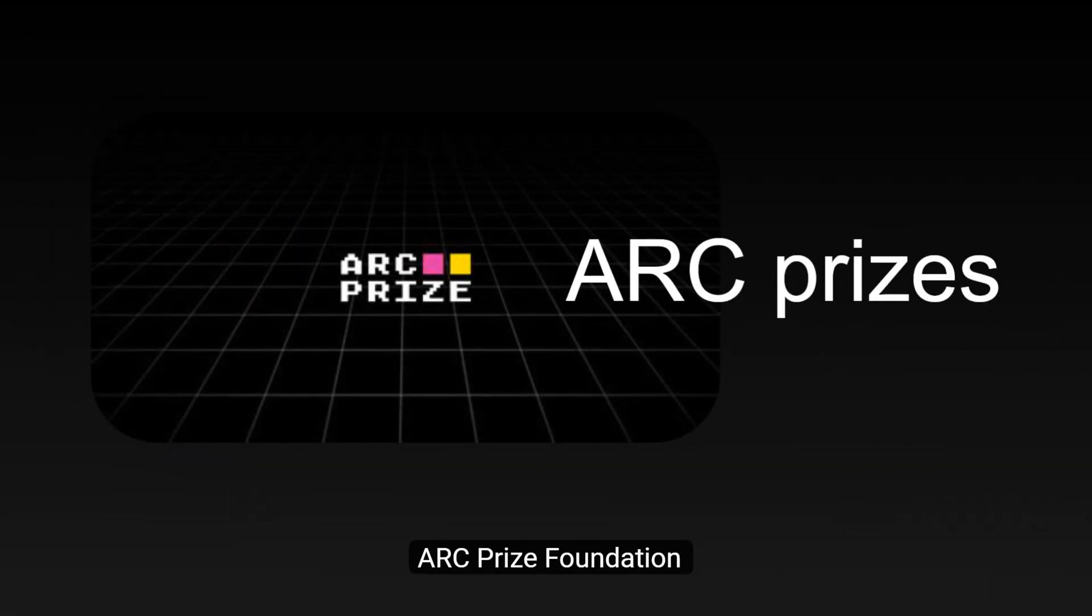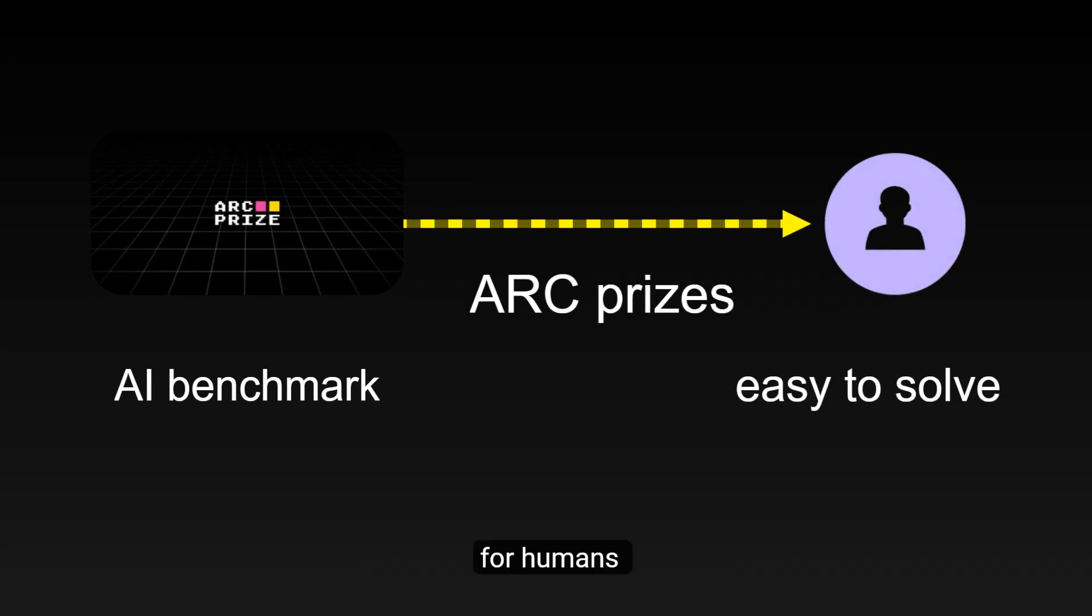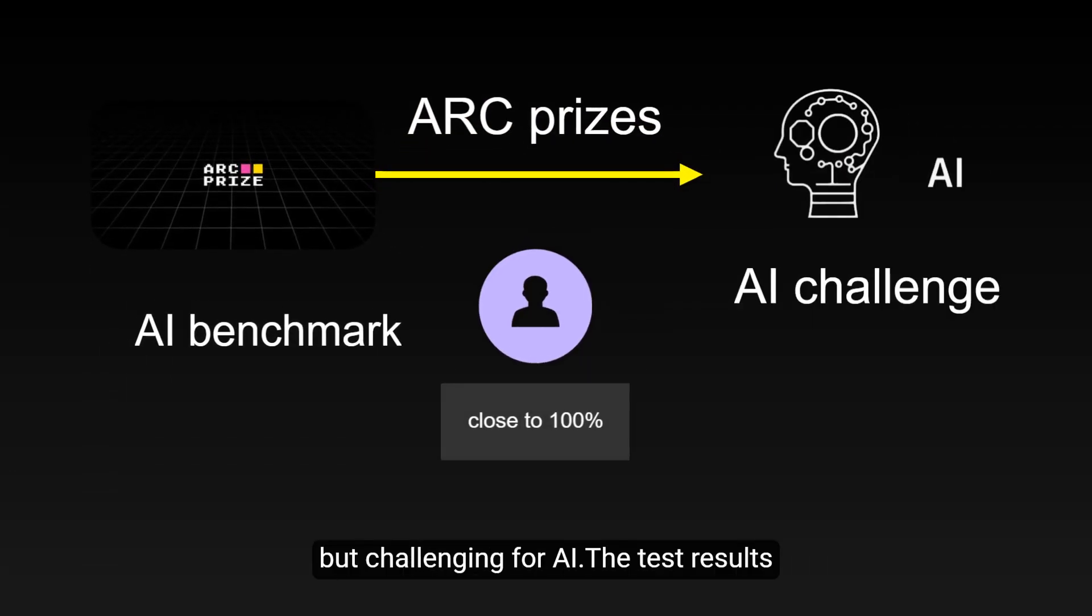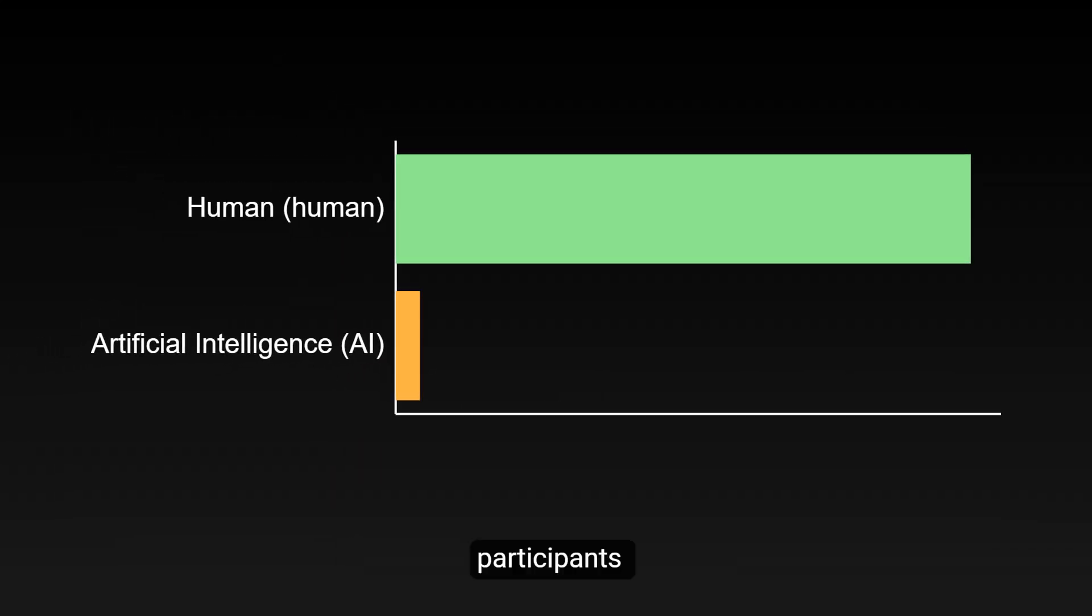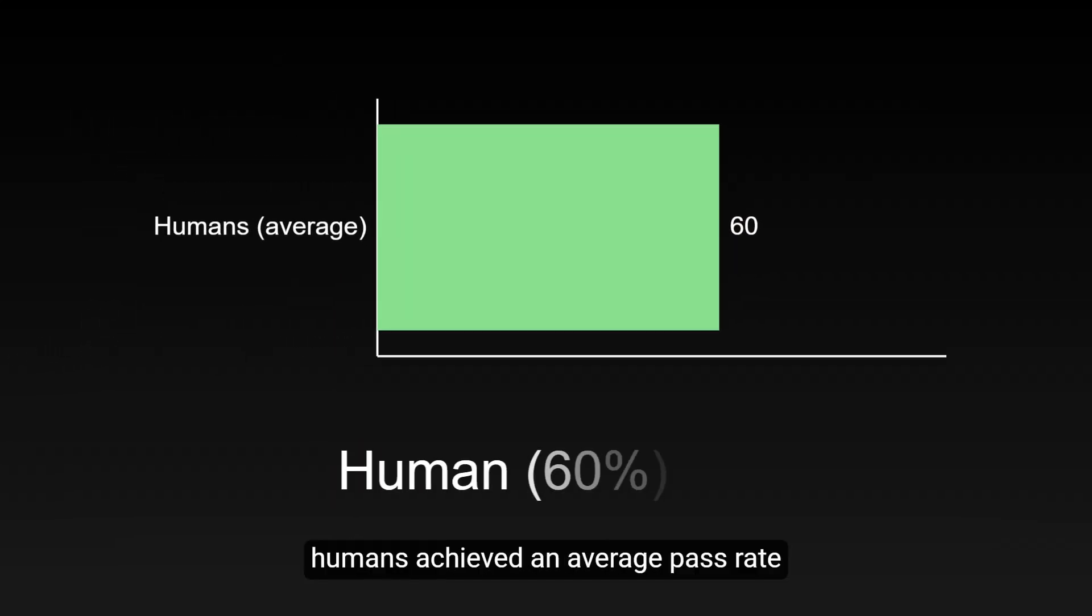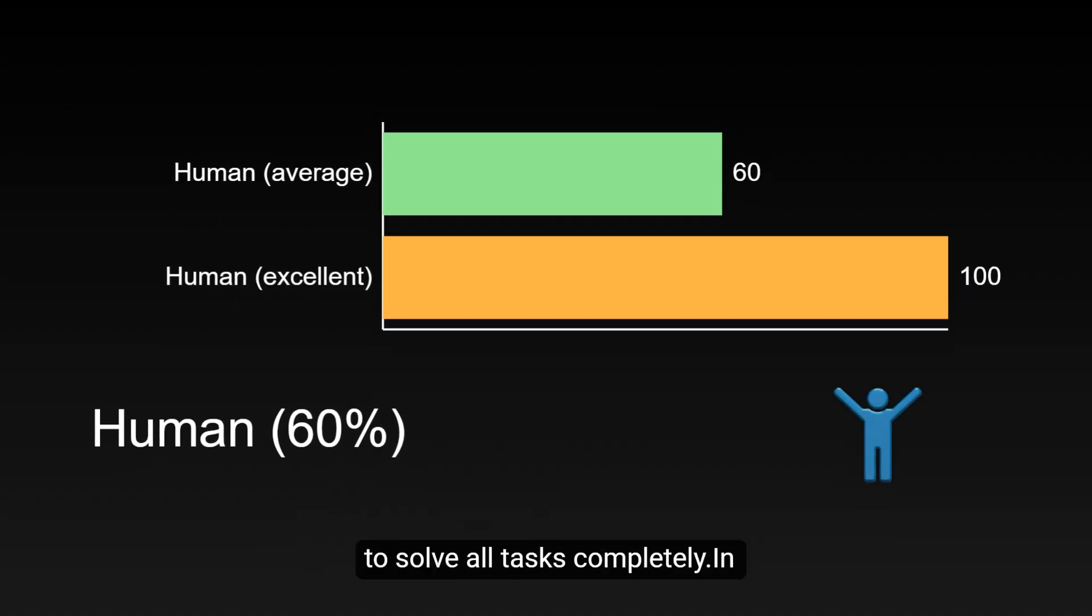This test benchmark comes from the ARC Prize Foundation, specifically designed a series of tasks that are relatively simple for humans, but challenging for AI. The test results are interesting. In a study involving hundreds of participants, humans achieved an average pass rate of 60%, with some participants even able to solve all tasks completely.